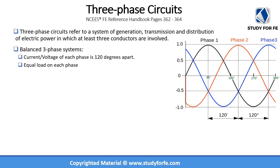To put it simply, three-phase circuits refer to a system of generation, transmission, and distribution of electricity in which at least three conductors are involved. Virtually almost all electricity is generated and distributed as three-phase power rather than single phase. A balanced three-phase system is one in which the current and voltage of each phase is 120 degrees apart and there is equal loading on each phase.